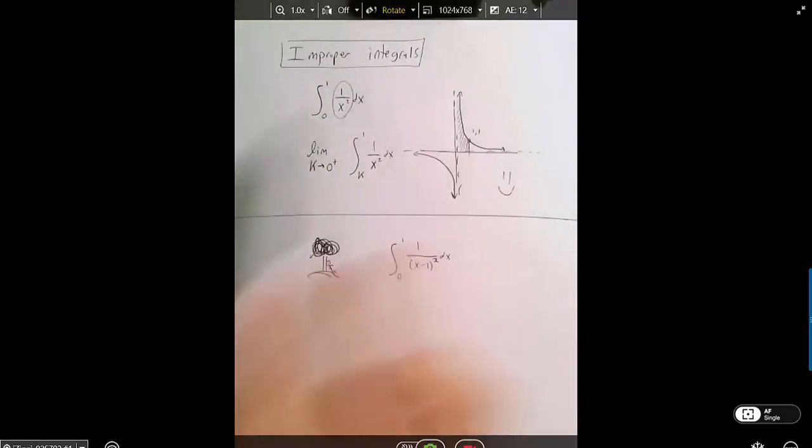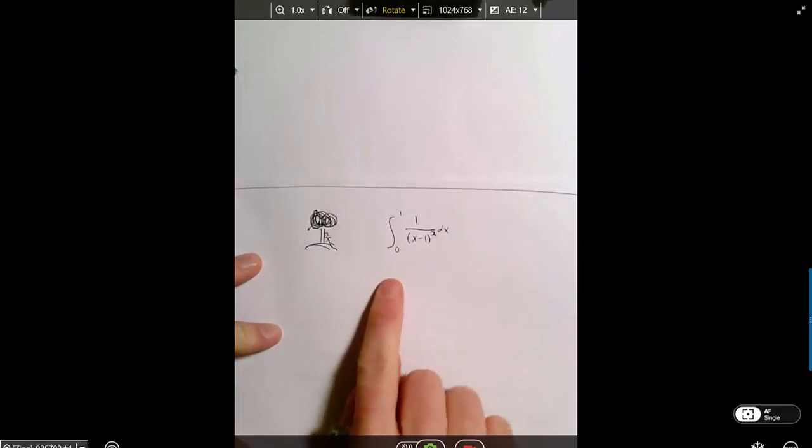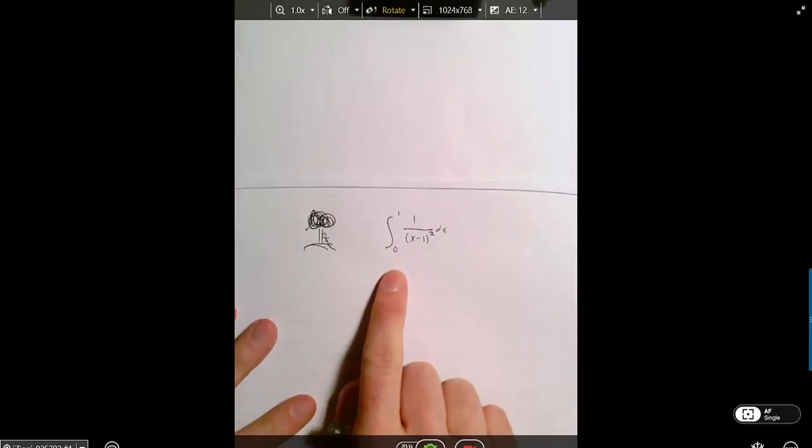So imagine we hadn't just talked about this, in fact, let's say that doesn't exist. What if I just gave you this problem on a test? I'm wondering how many of you would spot this as being improper by recognizing the underlying concept that there's an asymptote involved.